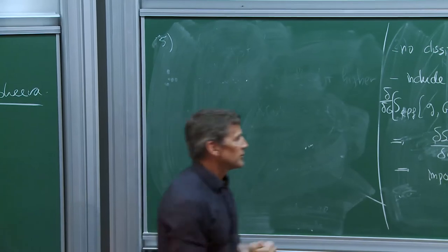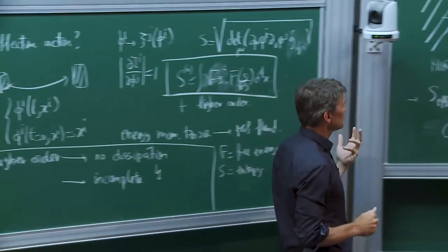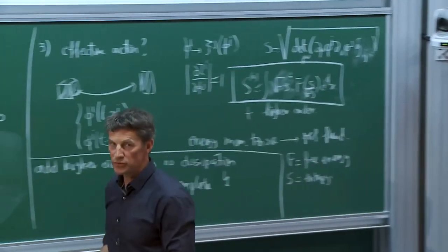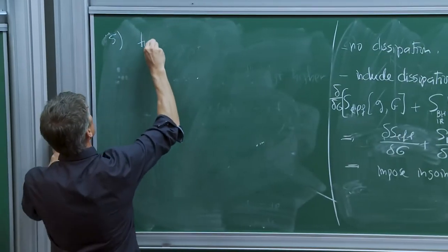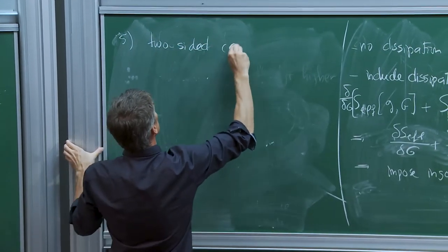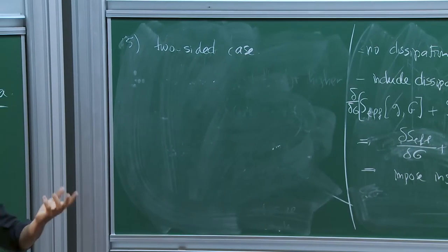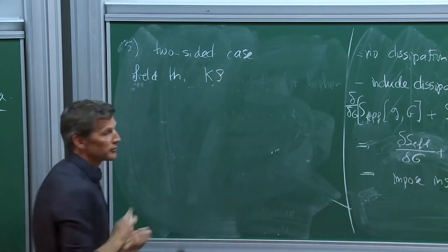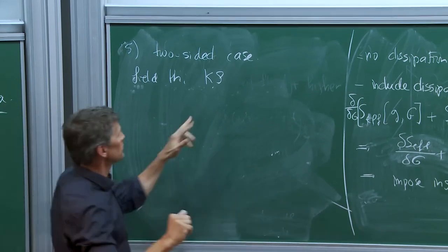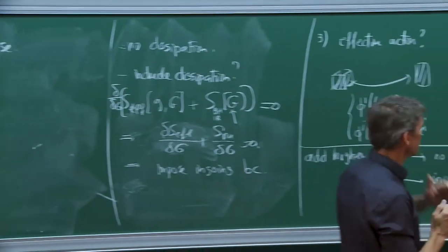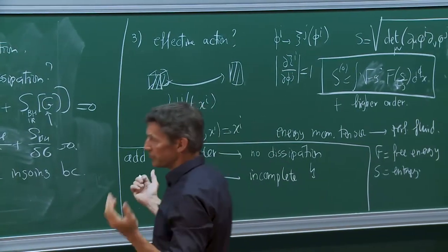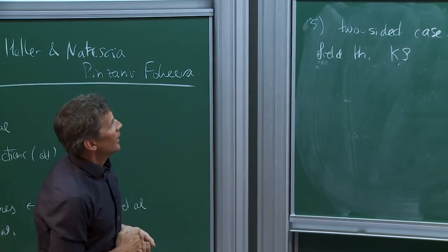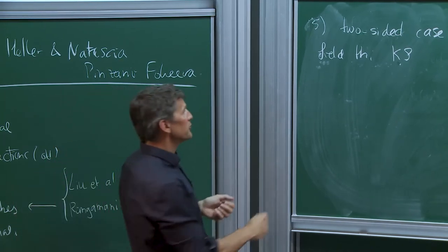The obstruction to writing down effective actions has to do with looking at the one-sided black hole. It turns out you can do much better if you go to the two-sided case, which in field theory means using the Schwinger-Keldysh formalism. Once you double everything — which is also what you do in standard finite temperature field theory — which from a gravity point of view means going from the one-sided black hole to the two-sided eternal black hole, you can do much better.